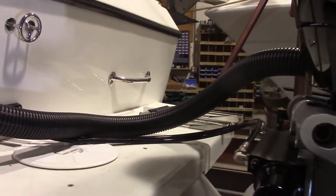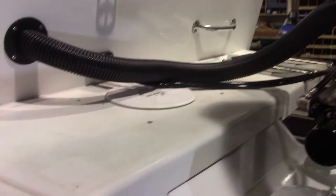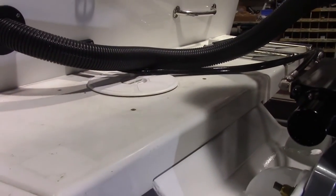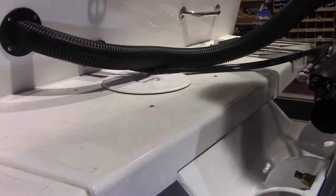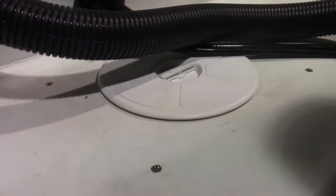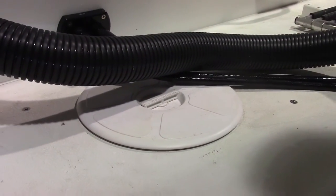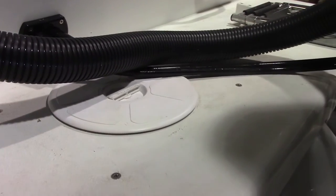We fill in that space with some paste. I can show you that later. We have to cut a hole in the swim grid to access inside so we can bolt it into the transom.